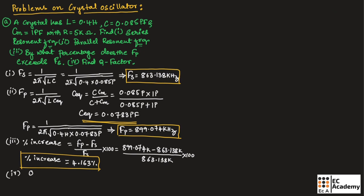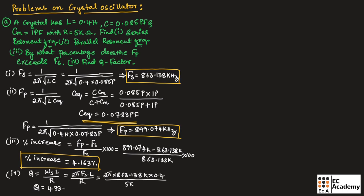Now let us find the Q factor. The Q factor equals omega S multiplied by L divided by R, where omega S is the angular frequency given as 2 pi Fs. Substituting the values, it will be 2 pi multiplied with 863.138 kilohertz multiplied with 0.4, divided by 5 kilo ohm. The Q factor is equal to 433.86.